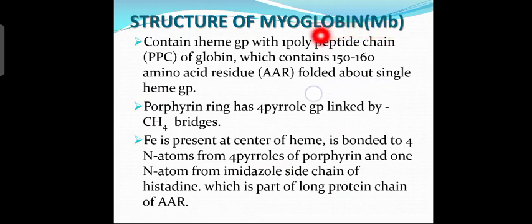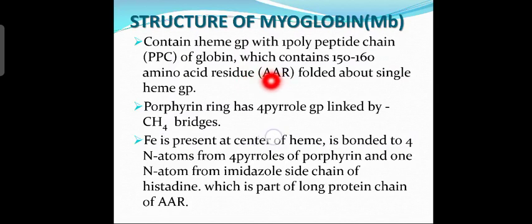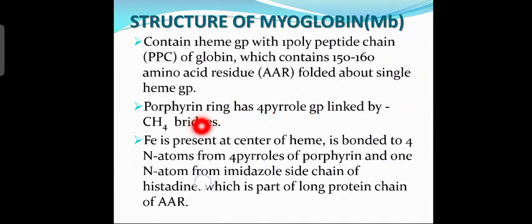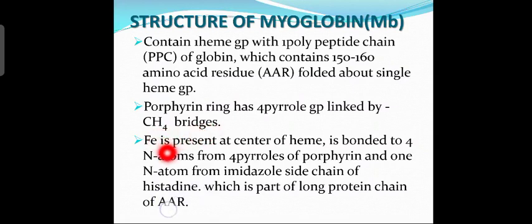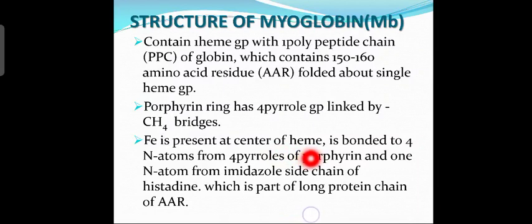The structure of myoglobin: myoglobin contains a heme group with a polypeptide chain (PPC) of globin, which contains 150 to 160 amino acid residues (AAR), folded about a single heme group. The porphyrin ring has four pyrrole groups linked by methane bridges. Iron at the center of the heme is bonded to four nitrogen atoms from the four pyrrole rings of porphyrin and one nitrogen atom from the imidazole side chain of histidine, which is part of the long protein chain.